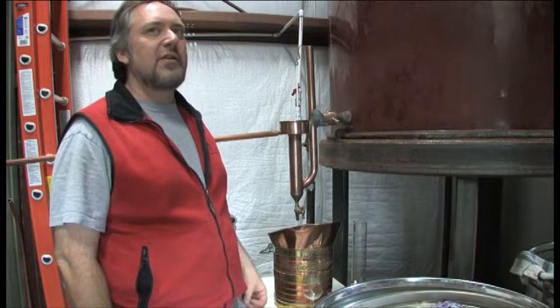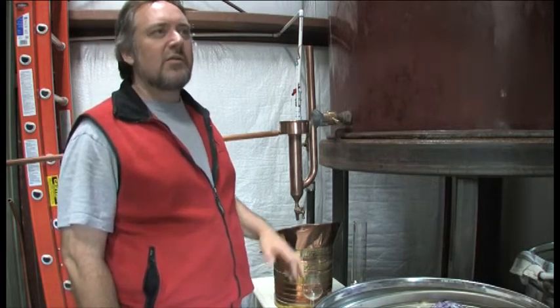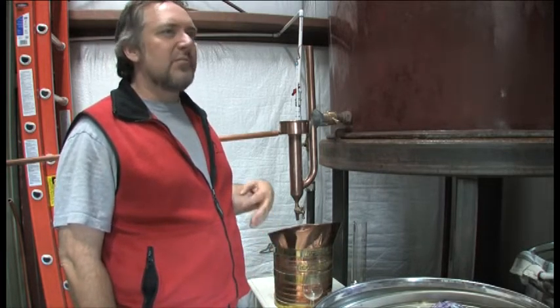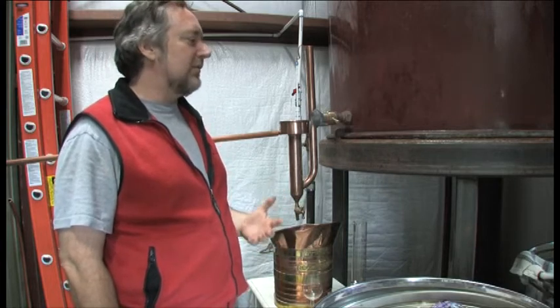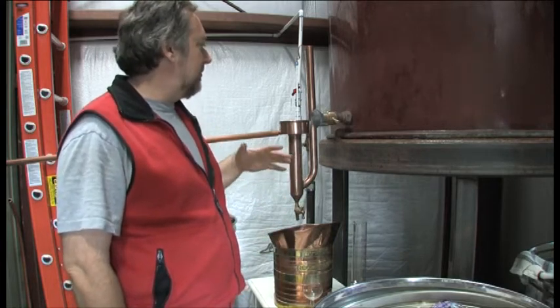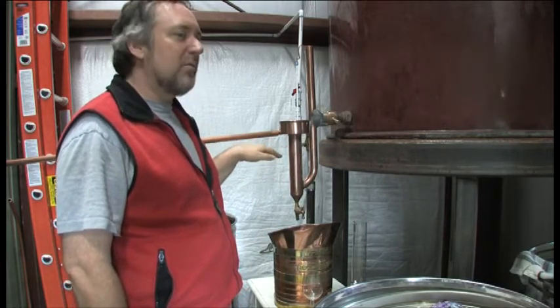Those volatile acids and fatty acids are things that we'd rather not drink or consume. It's things that are toxic to you when you drink wines. One of the things that we're doing is we're purifying what we're distilling.